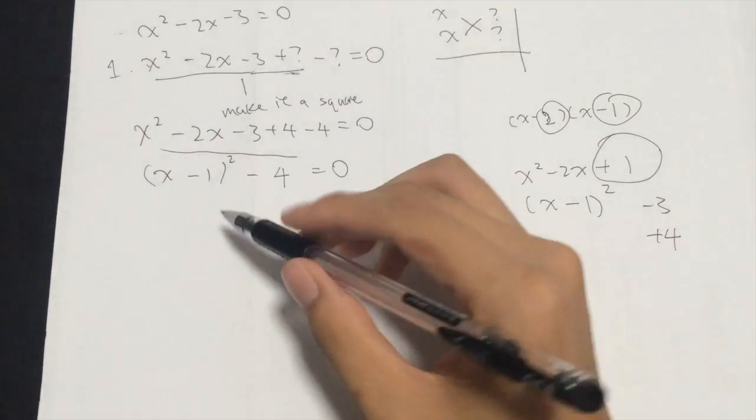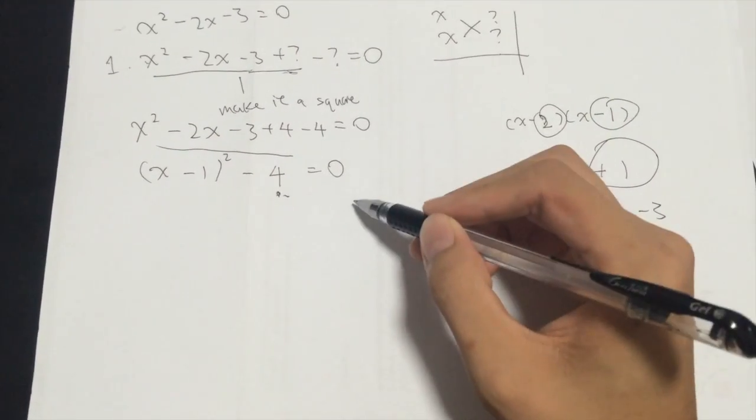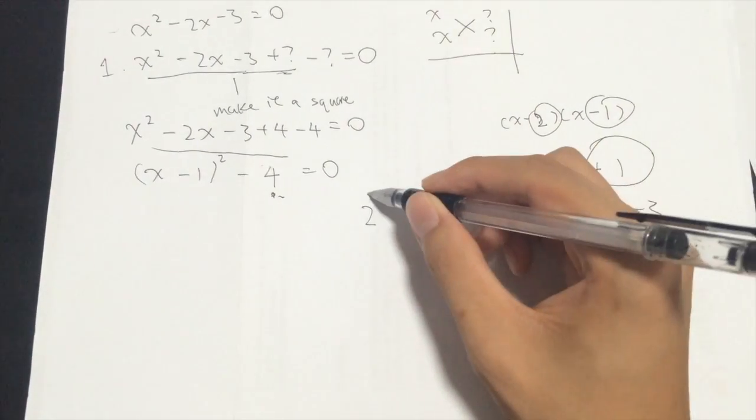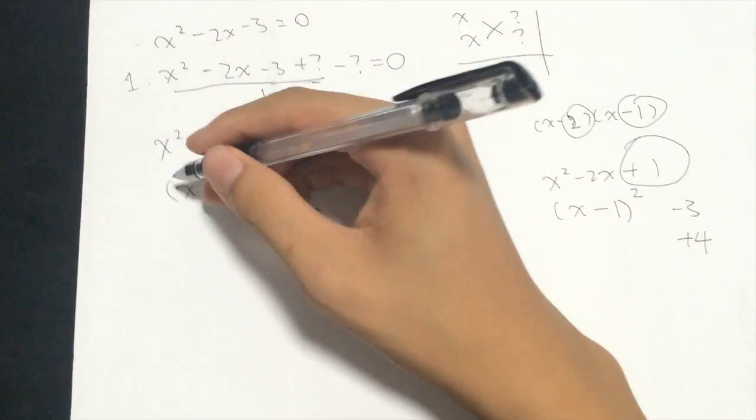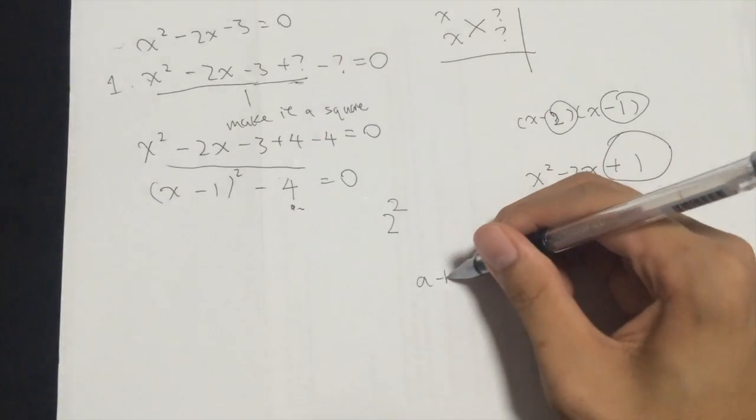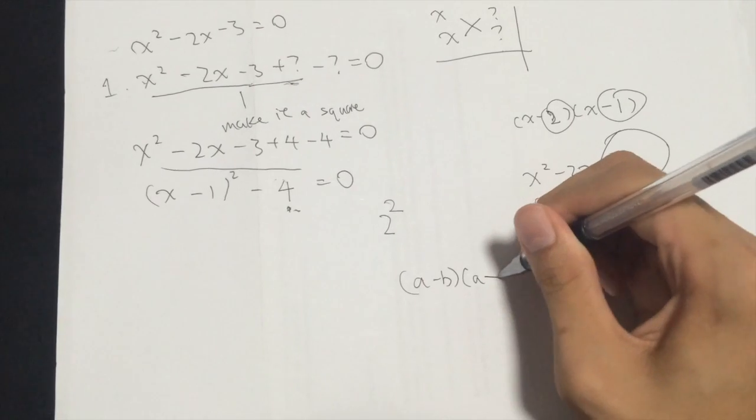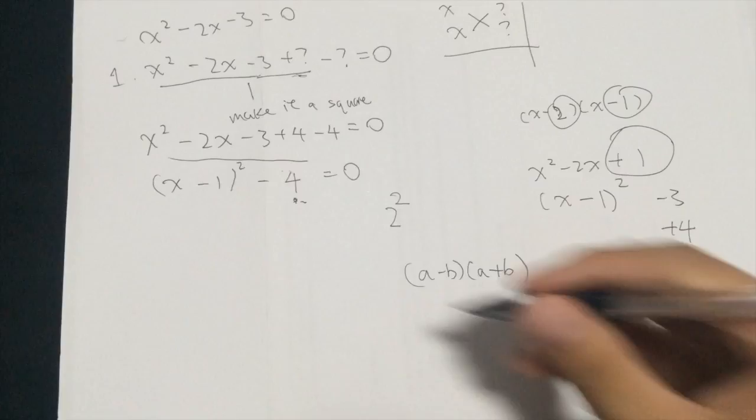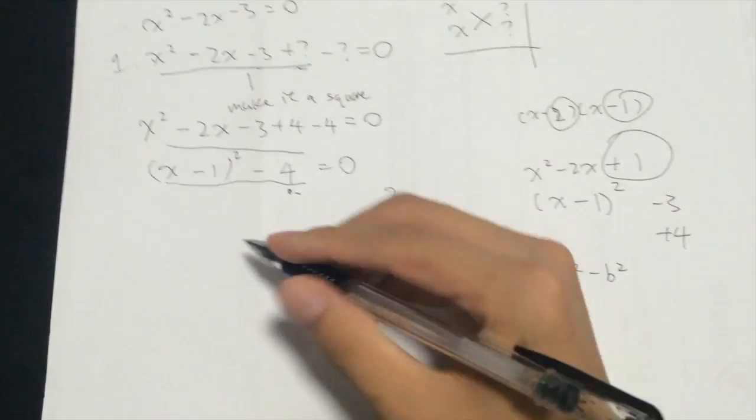Alright, now do you see the difference of two squares? What does 4 represent? 4 represents 2 squared. Now, the difference of two squares will be a minus b and a plus b, which makes a squared minus b squared. And this is the difference of two squares. So now we change it.